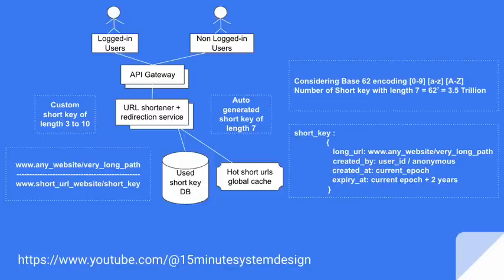Assuming all logged-in users can have the flexibility of providing a custom short key of length 3 to 10, while non-logged-in users will not have that flexibility and we will automatically generate a random short key of length 7 for them. We can have a URL shortener plus redirection service which can use an encoding mechanism to generate a short key of length 7. We choose length 7 because, considering base-62 encoding, the number of short keys of length 7 that can be generated is around 3.5 trillion over the lifetime, which is quite enough for this system.